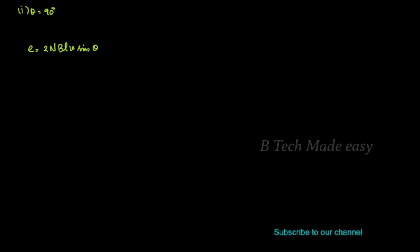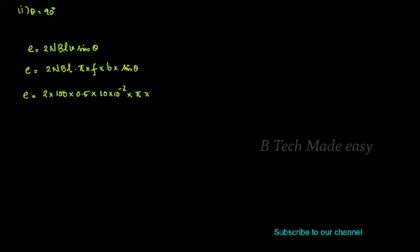E = 2N × B × l × v × sin θ, which can be written as E = 2N × B × l × π × f × v × sin θ. The frequency f = speed/60 = 500/60.